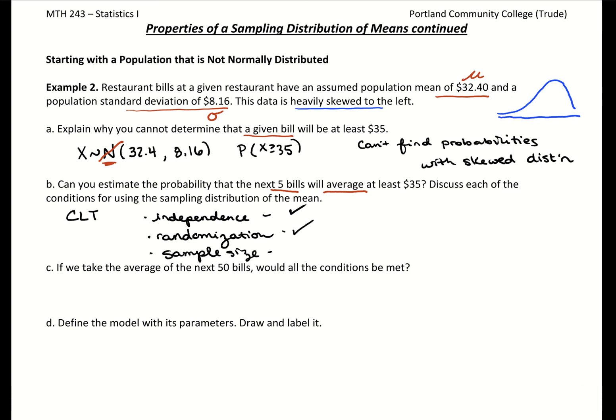For our sample size, what we need is a sample size greater than or equal to 30. Since we have a skewed distribution, we have to meet the sample size. However, our sample size is five, which is too small. Since our sample size is too small, we can't calculate this probability. So can you estimate this probability? No, because our sample size is too small.